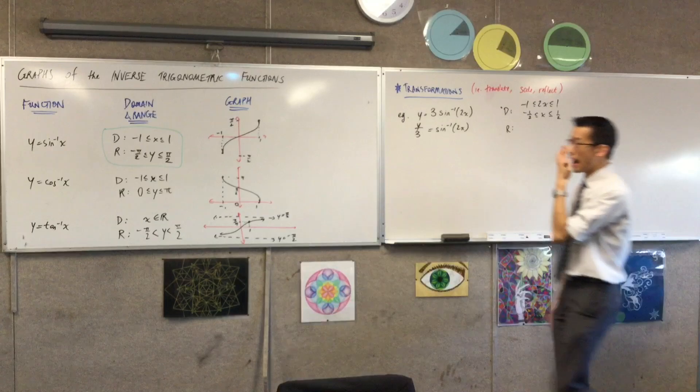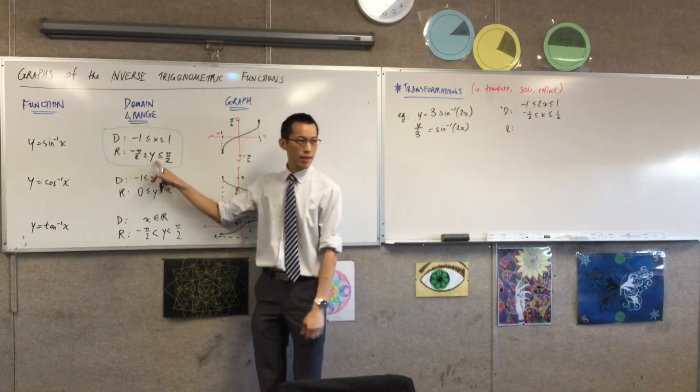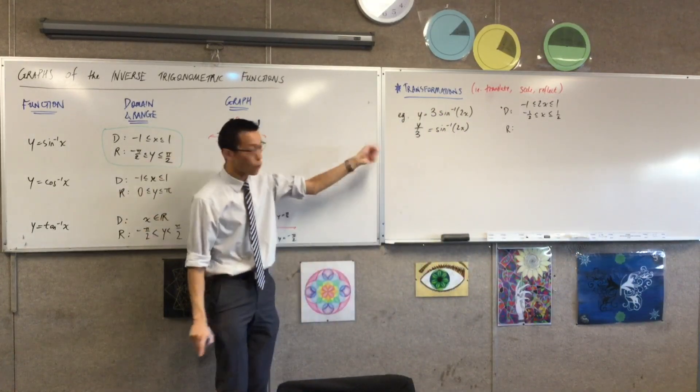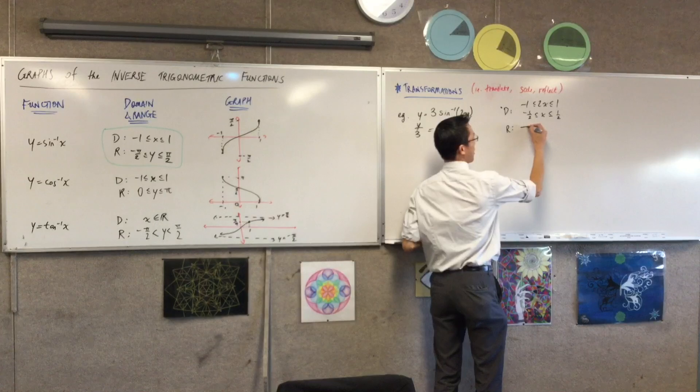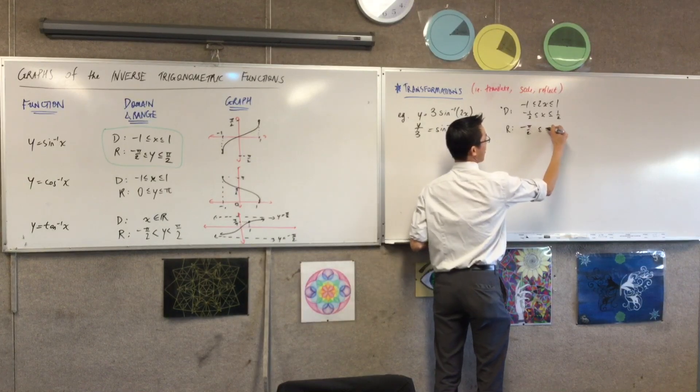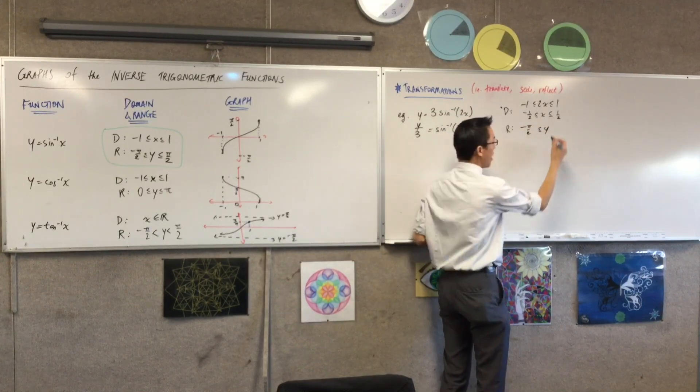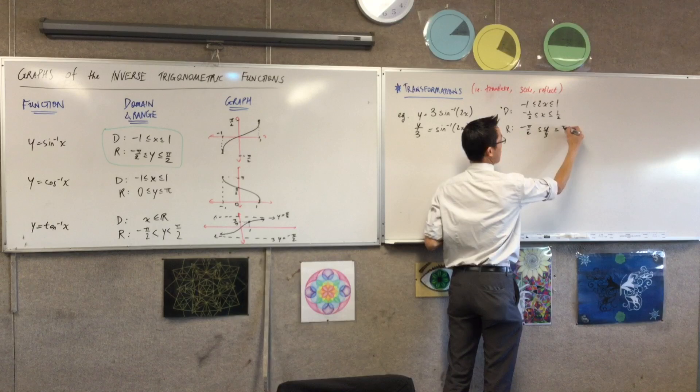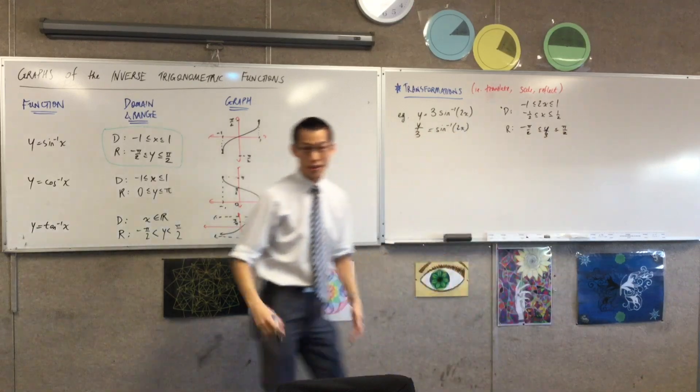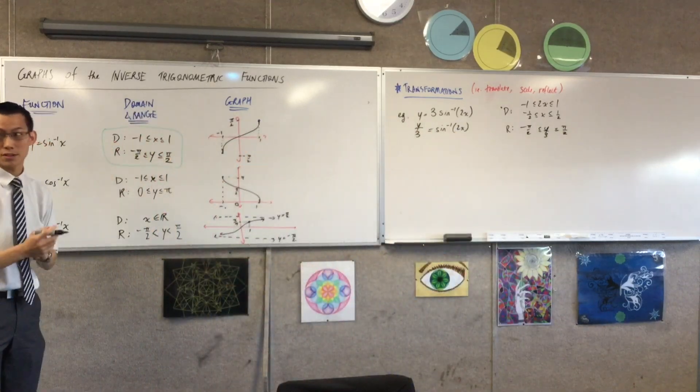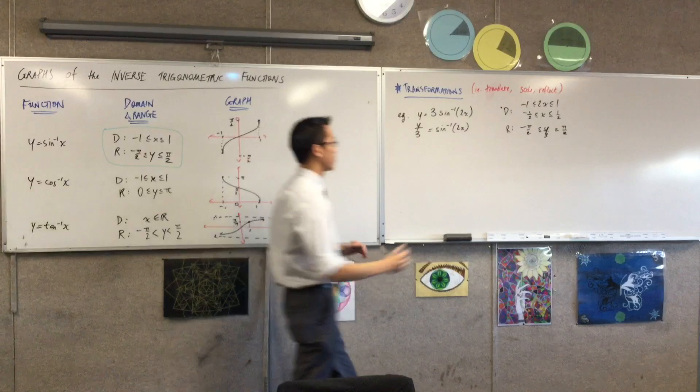In exactly the same way, I think about this range restriction, and I say, well, instead of y, I have y on 3. So instead of minus π on 2 less than or equal to y, I'm going to have y on 3 in the middle. And now, again, to make y the subject, have you got this? I multiply through. That's not complicated.